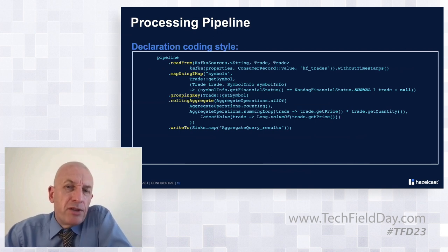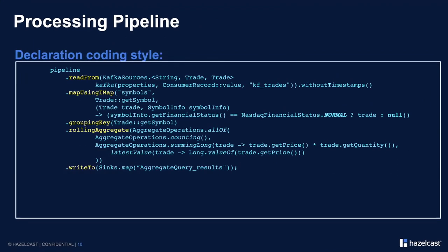Looking at the code, it's five steps. The read-from step takes a predefined Kafka topic as input. The enrichment step looks up the stock symbol's status in a Hazelcast map. Grouping uses a foreign key in the data as the primary key for the next stage. Rolling aggregation means one item in produces one item out — every trade updates the running total for that stock symbol, tracking trade count, trading volume (price times quantity), and last price. The final step writes results into a map.